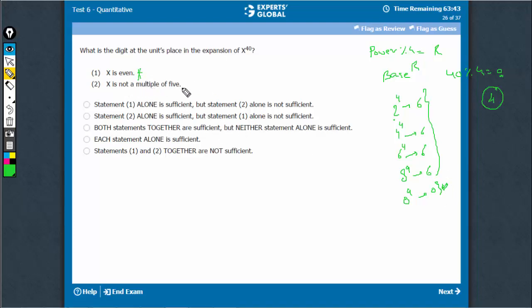Coming to statement 2, x is not a multiple of 5, but we still get different answers. It can be something like 1 raised to power 40, the last digit is 1, or it can be 2 raised to power 40, the last digit is 6. Multiple answers are possible and this doesn't work.